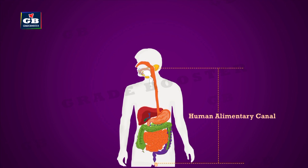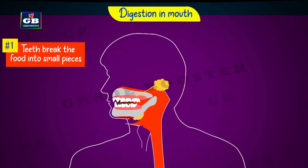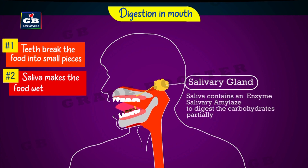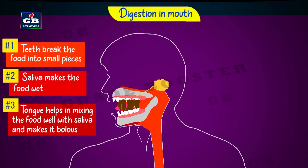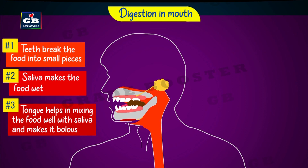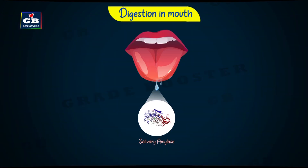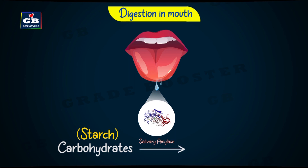This tube is called the alimentary canal. The food inside the mouth is made into a paste by the action of teeth and saliva. Saliva is a fluid that makes the food soft and wet. Saliva has an enzyme called salivary amylase, which digests starch partially.